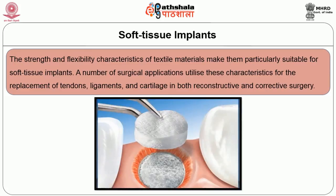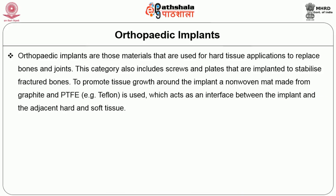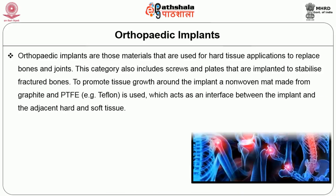The strength and flexibility characteristics of textile materials make them particularly suitable for soft tissue implants. A number of surgical applications utilize these characteristics for replacement of tendons, ligaments, and cartilage in both reconstruction and corrective surgery.